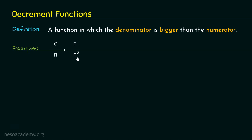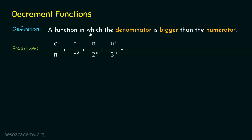N over N² is also a decrement function because N² is greater than N. N over 2ⁿ is also a decrement function because 2ⁿ is greater than N. N² over 3ⁿ is also a decrement function because 3ⁿ is greater than N². Here, 3ⁿ represents exponential increase while N² is polynomial increase, and exponential increase is greater than polynomial increase. So clearly this is also a decrement function, and there are many such decrement functions.